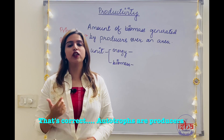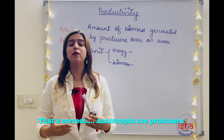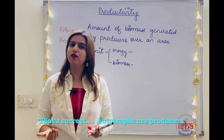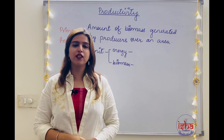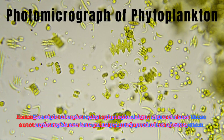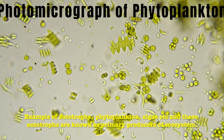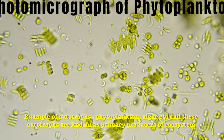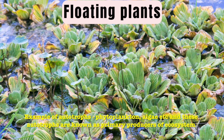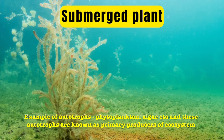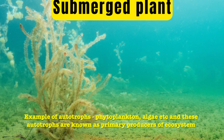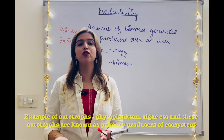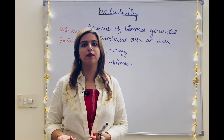Autotrophs are the organisms that can make their own food. Examples of autotrophs include phytoplanktons, algae, and plants. These are all autotrophs. They are the primary producers of the ecosystem.